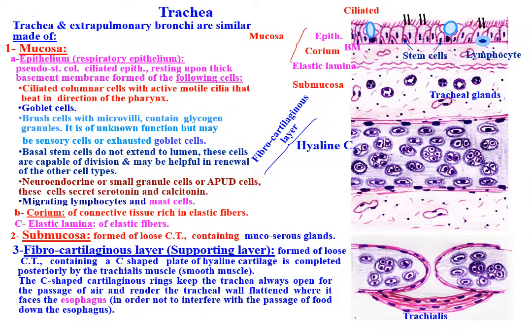The C-shaped cartilaginous rings keep the trachea always open for the passage of air, and render the tracheal wall flattened where it faces the esophagus, in order not to interfere with the passage of food down the esophagus. Finally, the adventitia is formed of loose connective tissue.